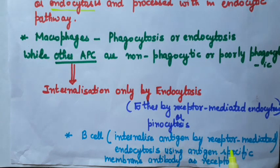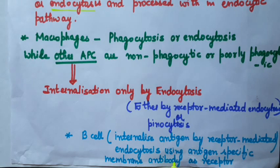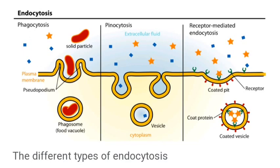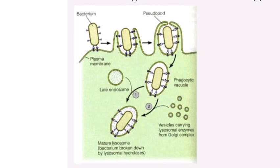For example, B cells internalize antigen by receptor-mediated endocytosis using antigen-specific membrane antibody as a receptor. In this diagram you can see phagocytosis, where solid particles are taken inside the cell; pinocytosis, which is cell drinking; and receptor-mediated endocytosis. The next slide shows the internalization of bacteria to form a phagocytic vacuole, which fuses with a lysosome to form a mature lysosome in which bacteria are broken down by lysosomal hydrolysis.